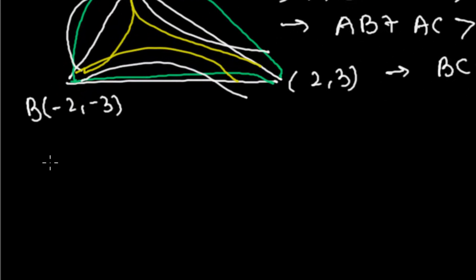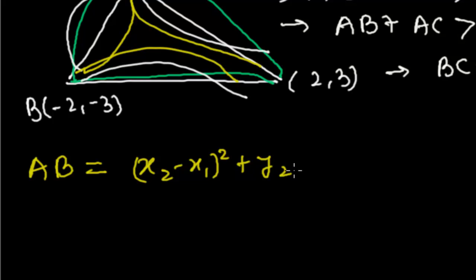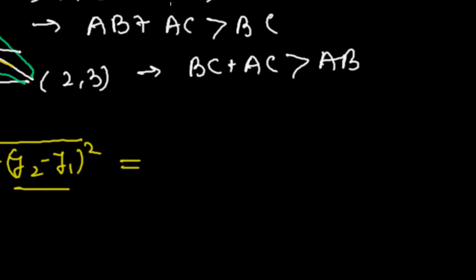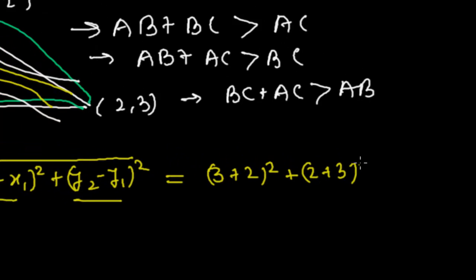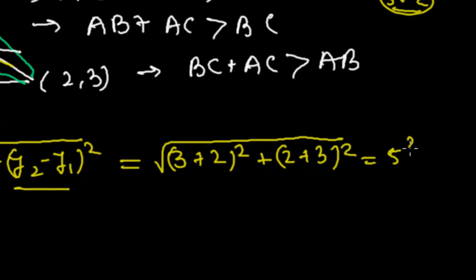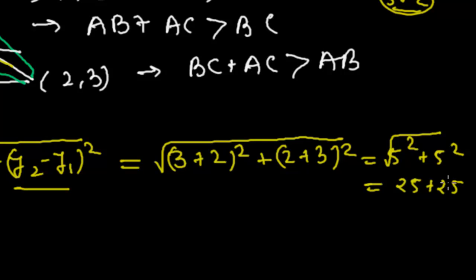Let me first find out the length of AB. We know the formula: distance = √[(x2 - x1)² + (y2 - y1)²]. So the difference of x-coordinates is 3 minus (-2), that is 3 plus 2, and difference of y-coordinates is 2 minus (-3), that is 2 plus 3. So it is √(5² + 5²) = √(25 + 25) = √50 units.